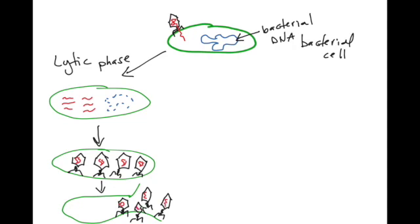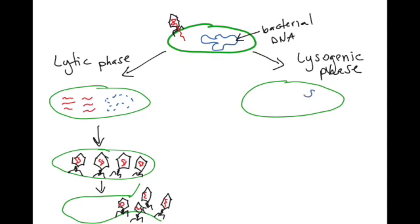The lysogenic cycle starts the same way, but is distinctly different once we get past the first few steps. Here we have our bacterial cell with its bacterial genome and the bacteriophage genome within that cell. However, unlike the lytic phase where new virions are made, this viral genome instead is going to become integrated into the host bacterial DNA. That red bacteriophage DNA becomes a part of our blue bacterial genome. The integrated bacteriophage DNA is called a prophage, and when this happens in an animal virus, we call it a provirus.